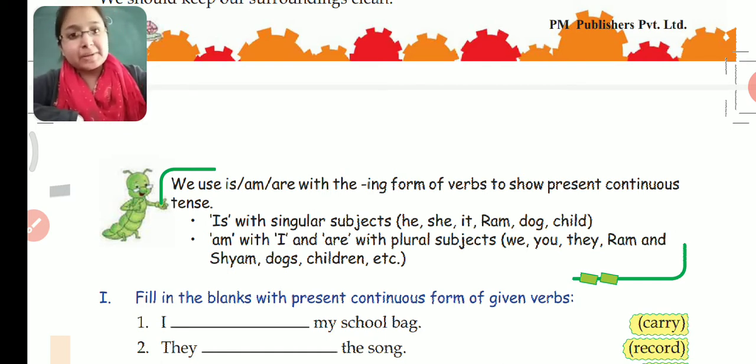We use 'is' with singular subjects. For example: Ram, Shyam, he, she, it, dog, cat. Singular means one. If we are talking about any singular noun, pronoun, or subject, then we use is.